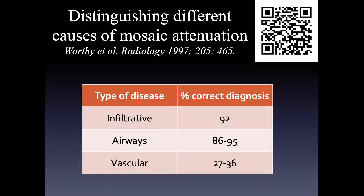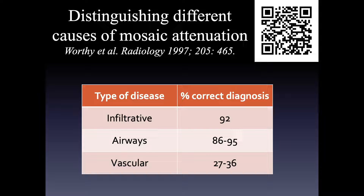How good are we at making the distinction between ground glass — often representing infiltrative disease — and mosaic perfusion, representing either airways or vascular disease? It turns out our ability to predict what type of disease is present is quite good when it comes to infiltrative and airways disease, but quite bad when it comes to vascular disease.